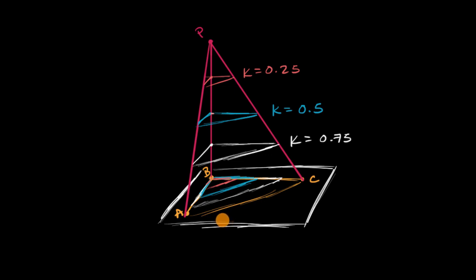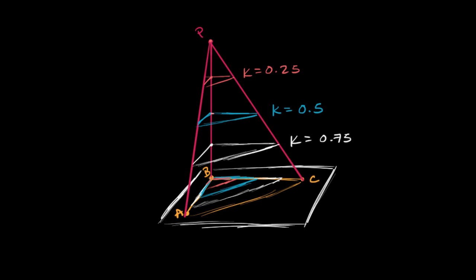Now let me ask you an interesting question. What if I were to try to take a cross-section right at point P? Well then, I would just get a point — not an actual triangle. But you could view that as a dilation with a scale factor of 0.